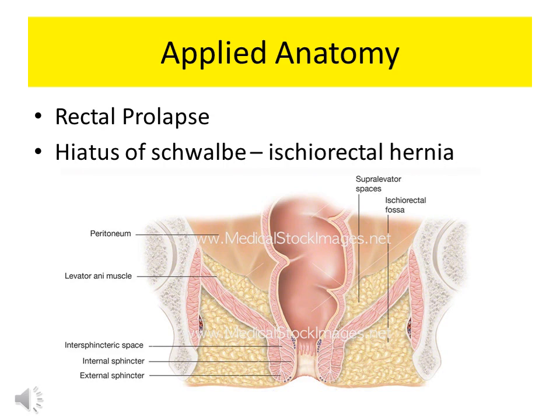The apex is formed by the meeting point of the fascia of the obturator internus and the inferior fascia of the levator ani muscle. In some individuals, these may not meet, leaving an opening called the hiatus of Schwalbe. In such circumstances, pelvic organs can herniate through this opening, resulting in a condition called ischioanal hernia.